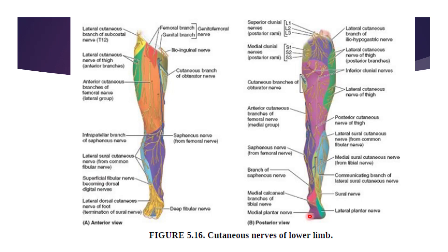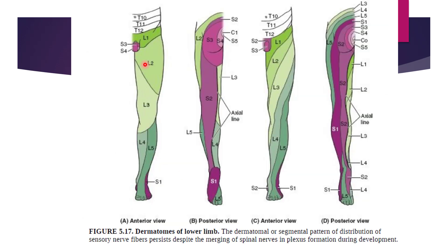Coming down to the foot region, there are two plantar nerves. The plantar region is the sole of the foot. The medial plantar nerve supplies the medial part and the lateral plantar nerve supplies the lateral part of the sole respectively. There is also the medial calcaneal branch of the tibial nerve, which supplies the skin over the calcaneum. These are the cutaneous nerves supplying the skin of the lower limb.